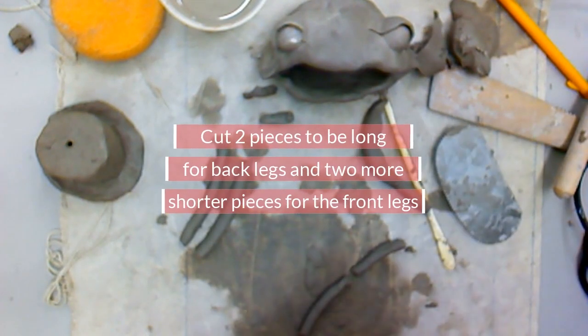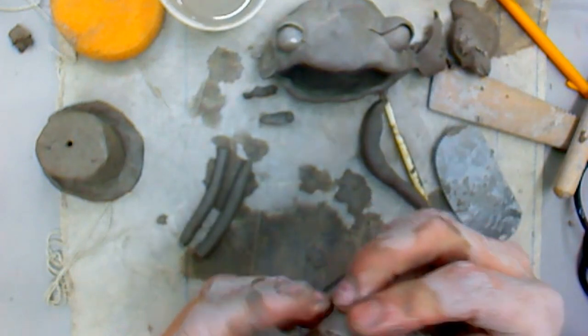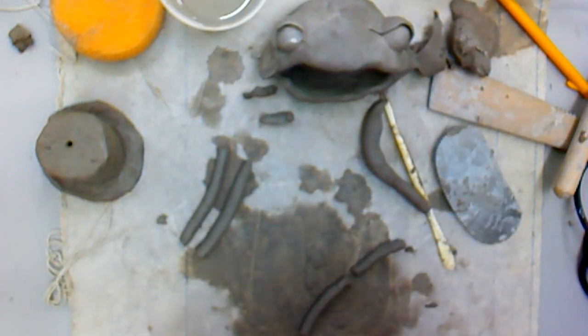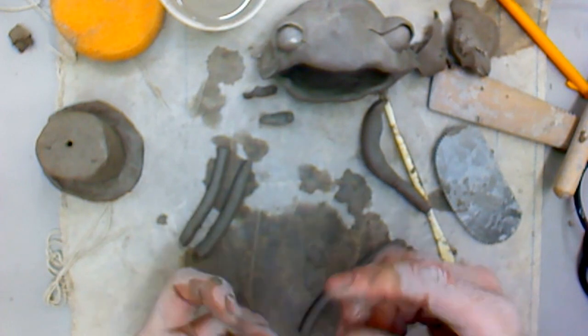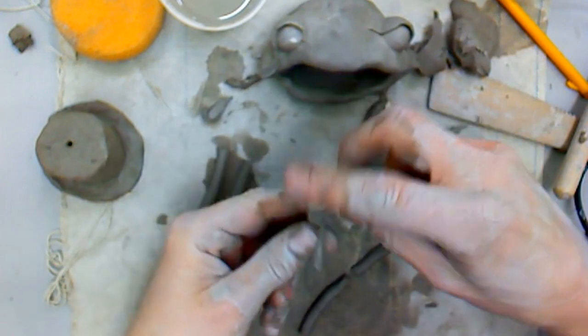Now we're going to use these two coils that we've already rolled out, and we're going to cut them so that we have two longer sides and two shorter sides, and we want both sets of pieces the same length or so. We're going to make a pair of front legs and a pair of back legs.